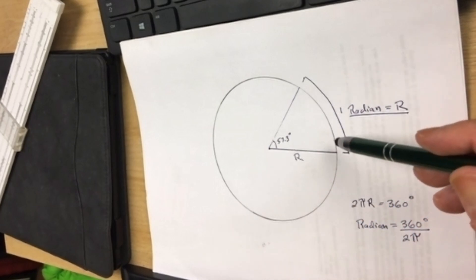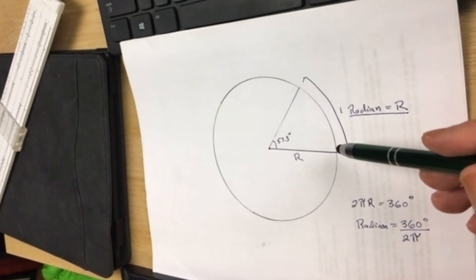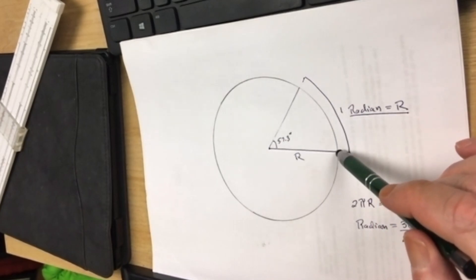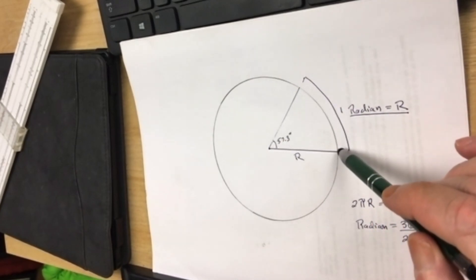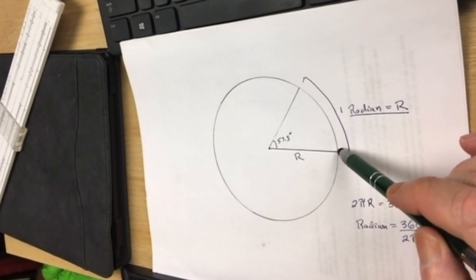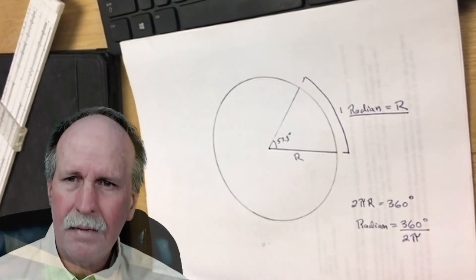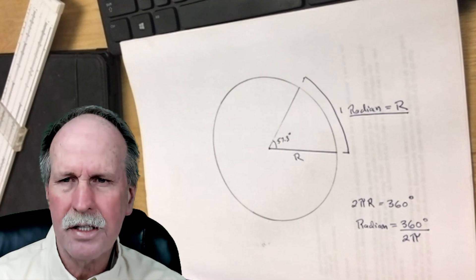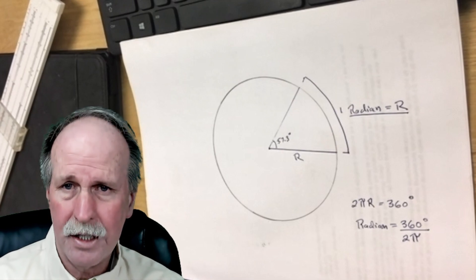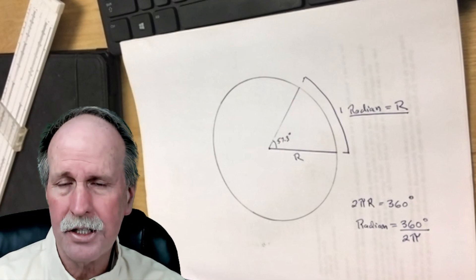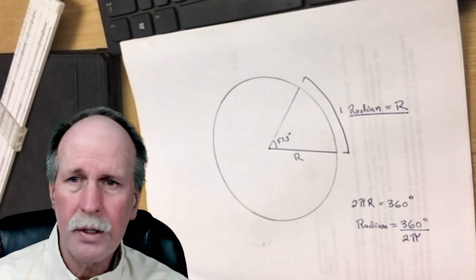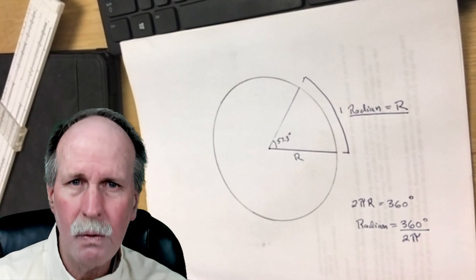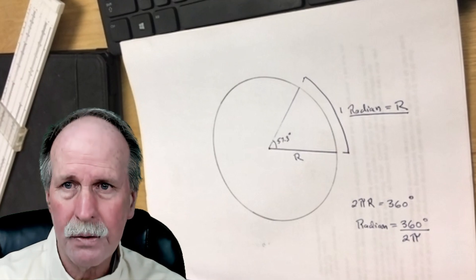If you take any circle of any radius and take out a 57.3 degree section of that, this portion of the circumference will equal the radius. The key concept here is that you don't need to know the radius of the earth. You just need to know how many degrees you have traveled across the surface of the earth. And then you can calculate what one radian would be. And once you know what one radian is, you know the radius of the sphere.